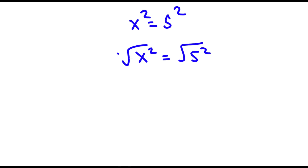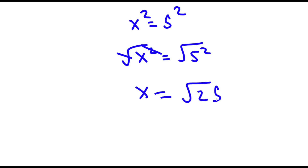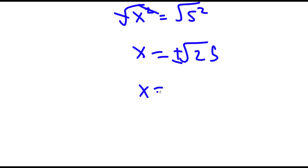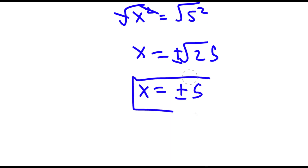So now I have the square root of x squared is equal to the square root of 5 squared. These cancel out and I'm left with x is equal to the square root of 25, which is plus or minus 5. The square root of 25 is 5, so I have x is equal to positive or negative 5. So this is my answer.